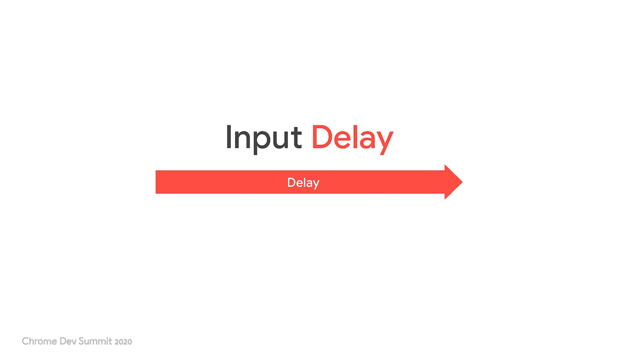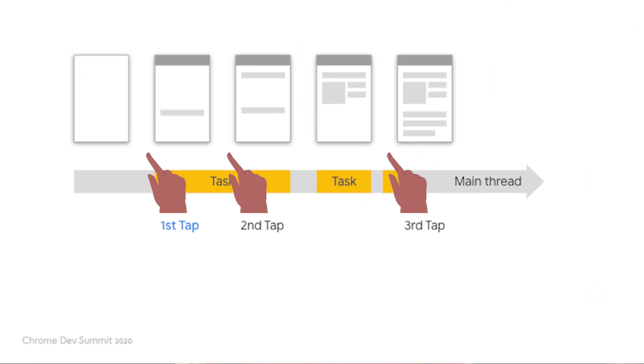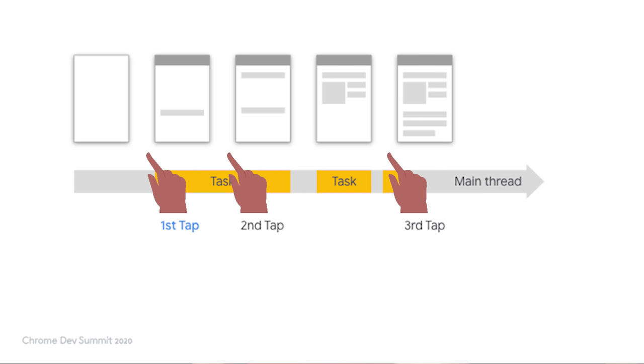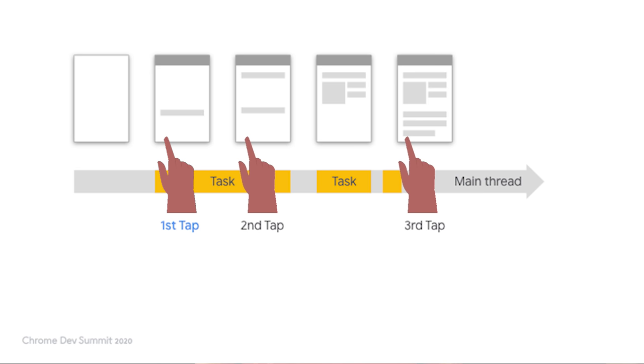The metric 'input delay' refers to the very first part. We measure an input delay for every discrete action a user takes, such as a tap, a click, or a key press. Scrolling the page is not counted since it can usually still happen even if the main thread is busy. Looking at this example page load, the first input delay is the very first interaction after a user navigates to your page. We want to concentrate on the first one because that's often when the browser is the busiest — it's parsing and executing various large JavaScript files, and it's a great time to make a good first impression as a web developer.